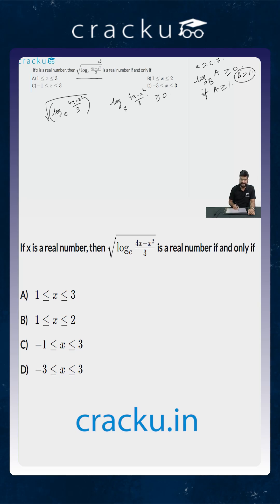So in this case, as e is greater than 1, for this entire logarithm to be greater than or equal to 0, 4x minus x square by 3 has to be greater than or equal to 1. When this term equals 1, the logarithm will become 0. So let us just simplify this and then find out the interval in which x has to be present.